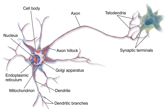Neurons communicate with one another via synapses, where either the axon terminal of one cell contacts another neuron's dendrite, soma, or, less commonly, axon. Neurons such as Purkinje cells in the cerebellum can have over 1,000 dendritic branches, making connections with tens of thousands of other cells. Other neurons, such as the magnocellular neurons of the supraoptic nucleus, have only one or two dendrites, each of which receives thousands of synapses.